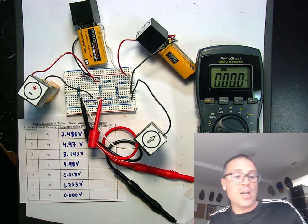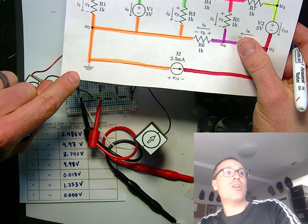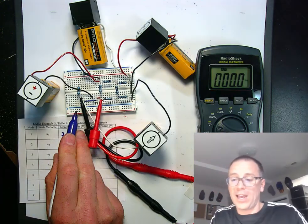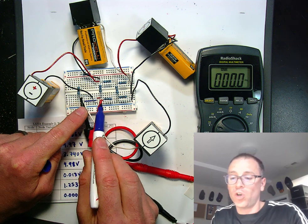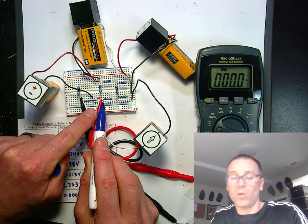That makes a lot of sense since node 7 is the node that we attach ground to, and there should be no voltage drop from that piece of metal to that piece of metal.